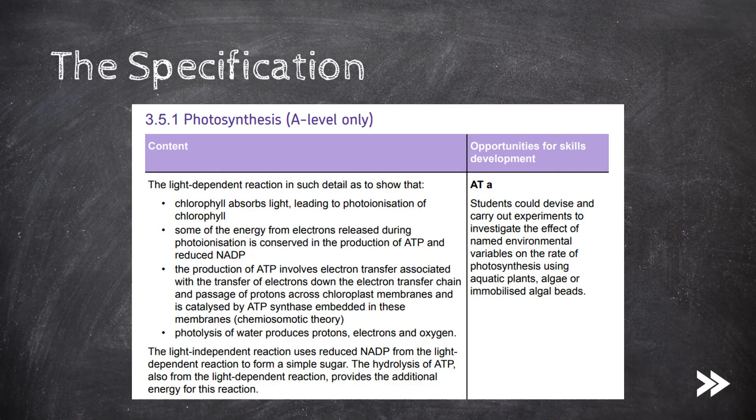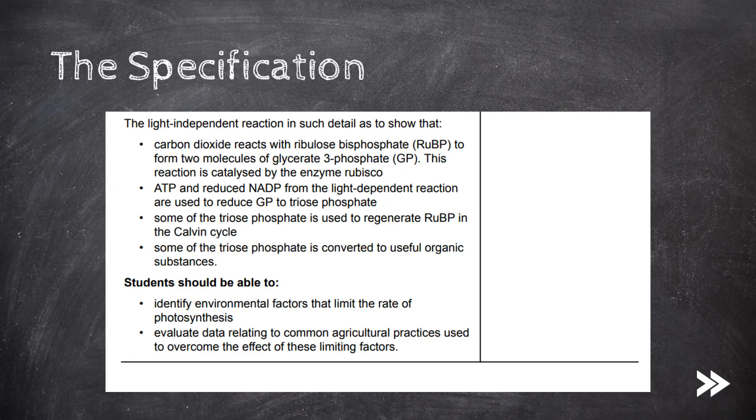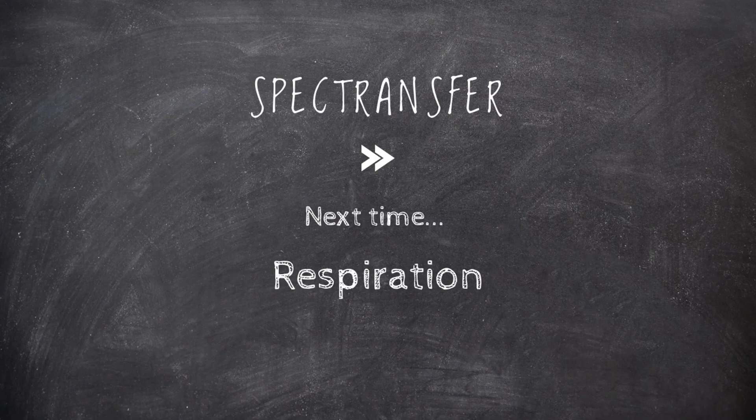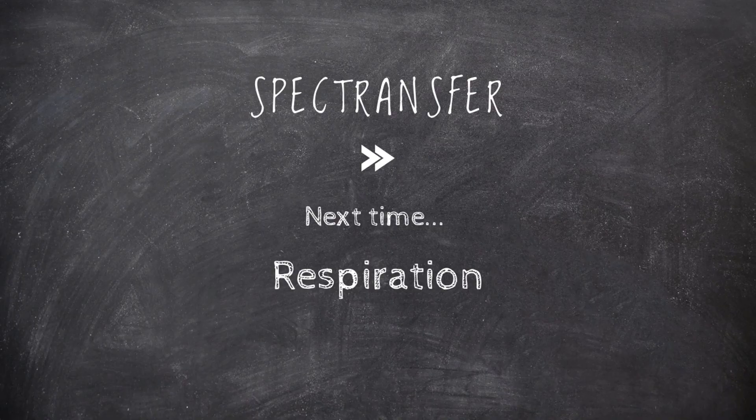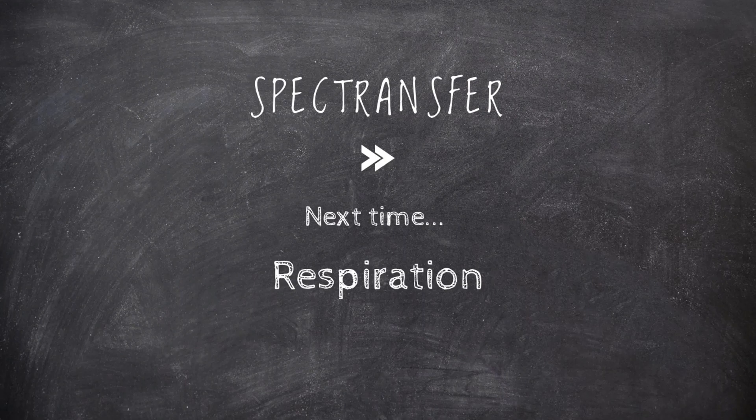Great, so we have covered the light dependent reaction including the stages of photoionization, photolysis and the production of ATP and reduced NADP in chemiosmosis. We have covered the light independent reaction and how it uses reduced NADP and ATP to form useful organic compounds via the various stages in the Calvin cycle and the different compounds that are formed in each stage. Finally, we have covered the factors that limit the rate of photosynthesis. Great, that would be it for now guys. Thanks for watching, please comment, subscribe, add any ideas or suggestions. See you next time when we will be covering respiration.